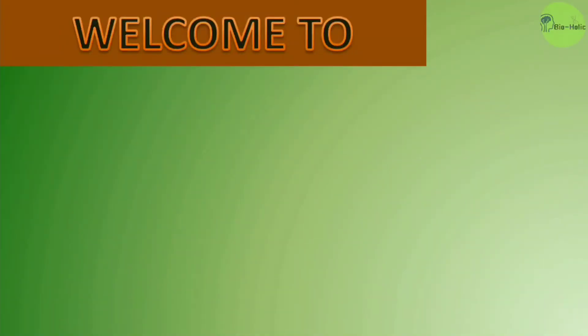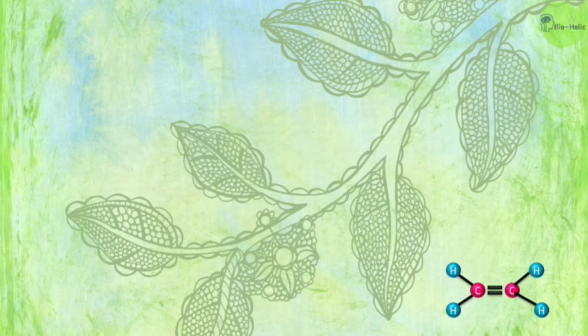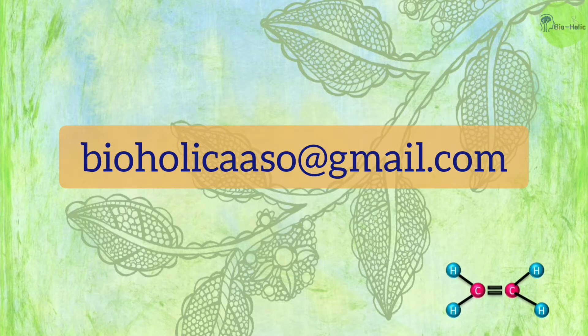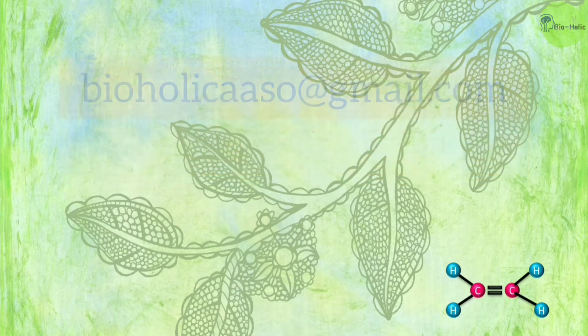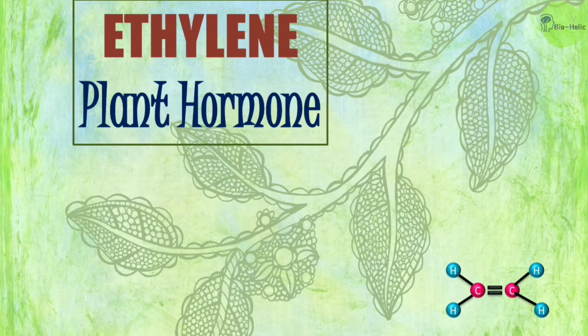Hello, welcome to Bioholic. I'm Olivia, here with another class on plant hormones. We have already learned about the auxins, gibberellins, and cytokinins previously. If you have any doubts, you can ask in the comment section or mail us at the ID provided in the description box. Today we will discuss the fourth major plant hormone — ethylene — a very significant plant hormone, as it is the only gaseous plant hormone. Let's learn about its role in plant growth and development.